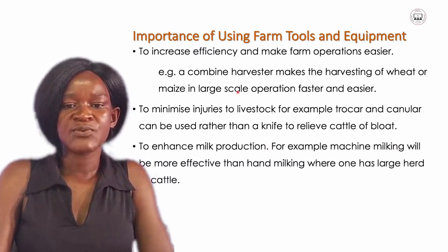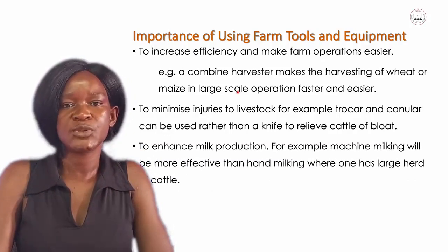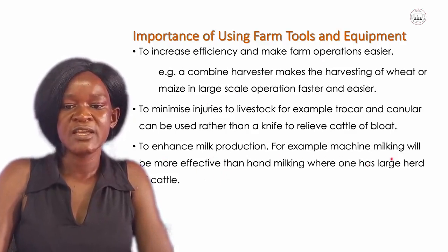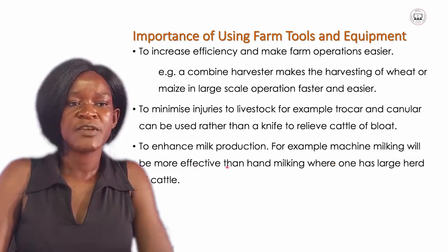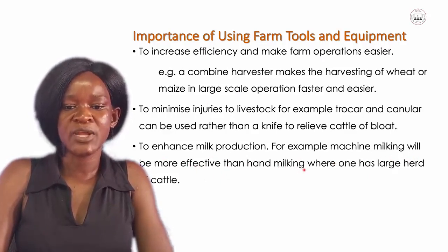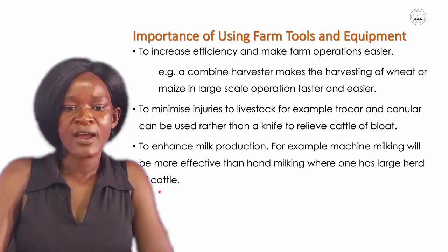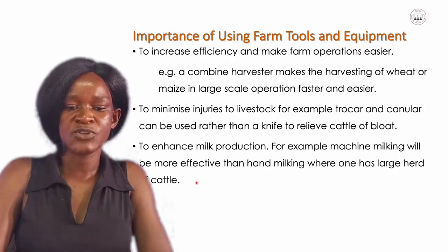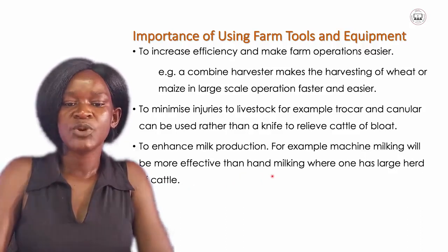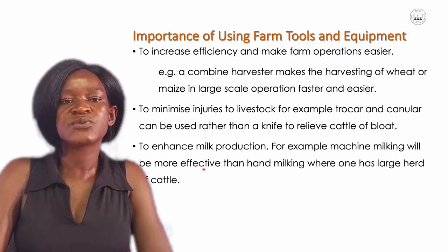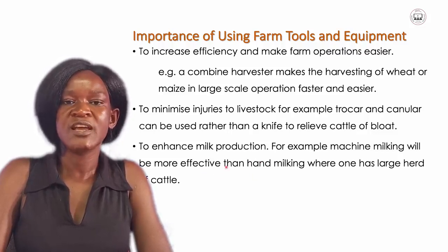The last importance of farm tools and equipments is that they enhance production. For example, they can enhance milk production. Milking machines are very effective compared to using hands, especially when one has a large herd of cattle, most especially dairy cattle. Milking machines will enhance milk production and are more effective than using bare hands.